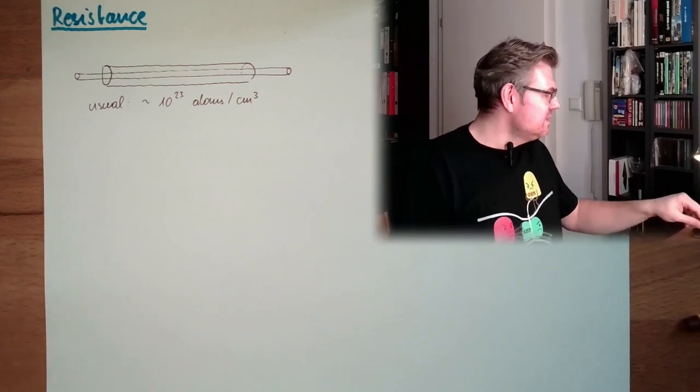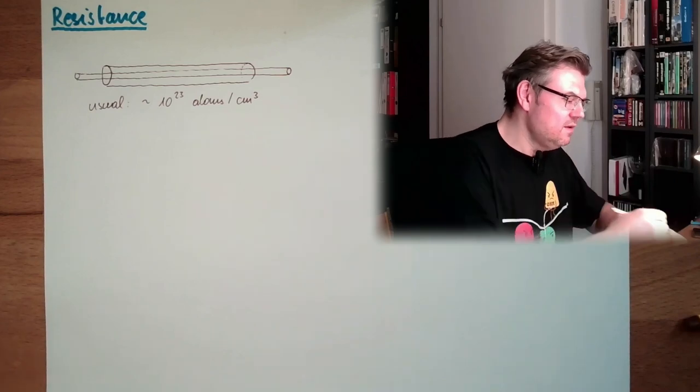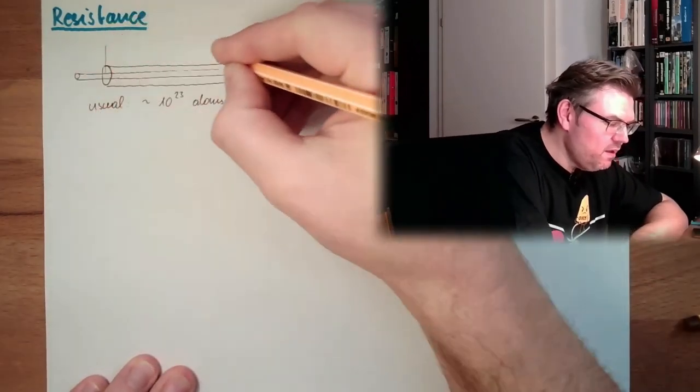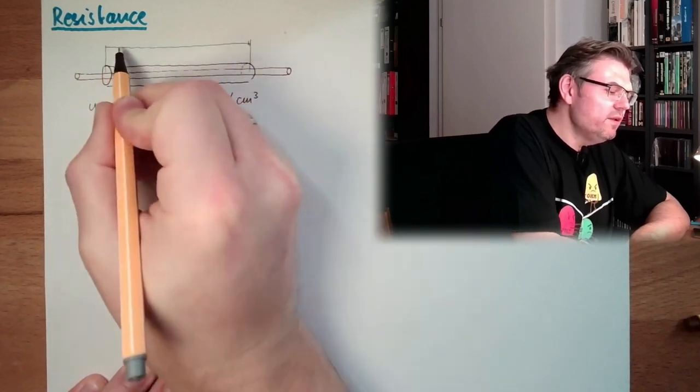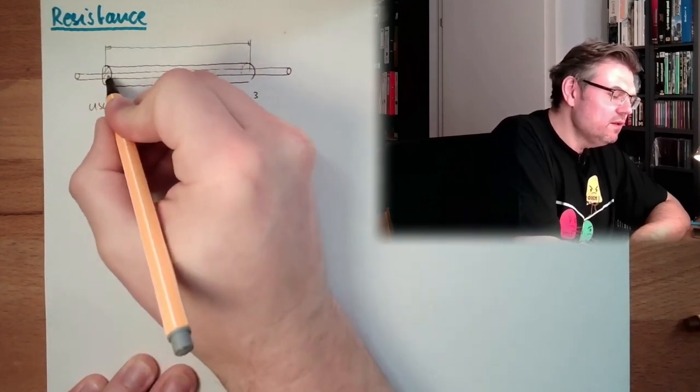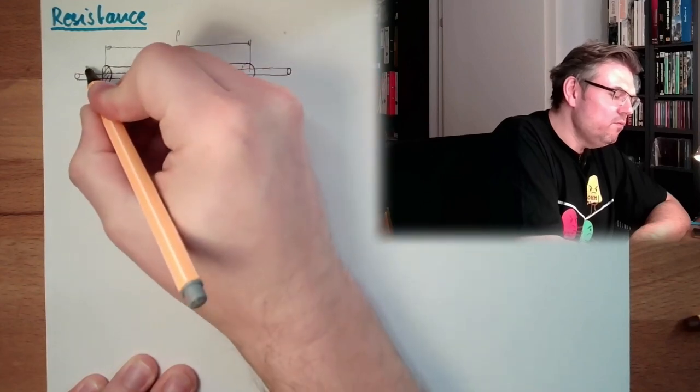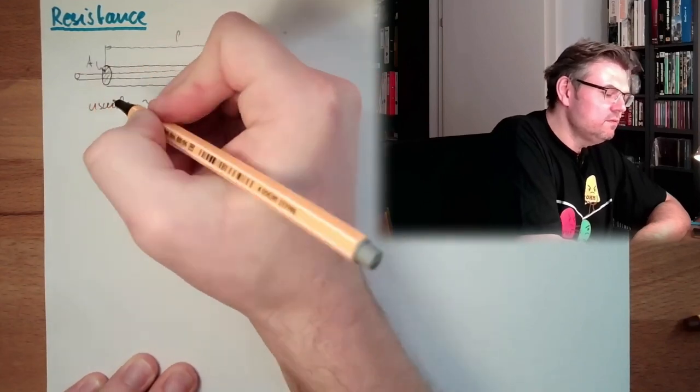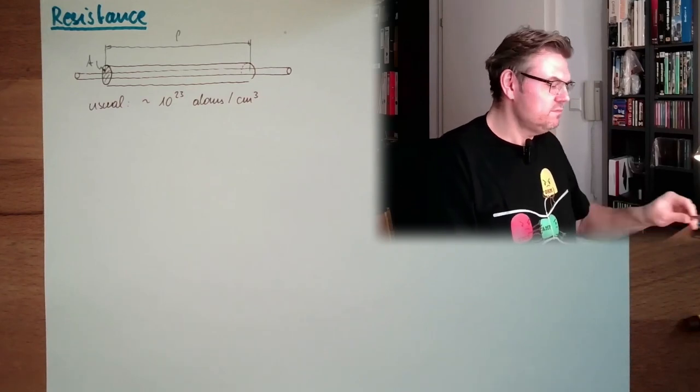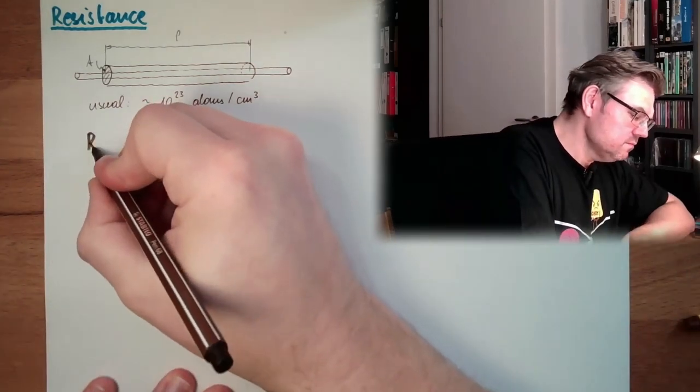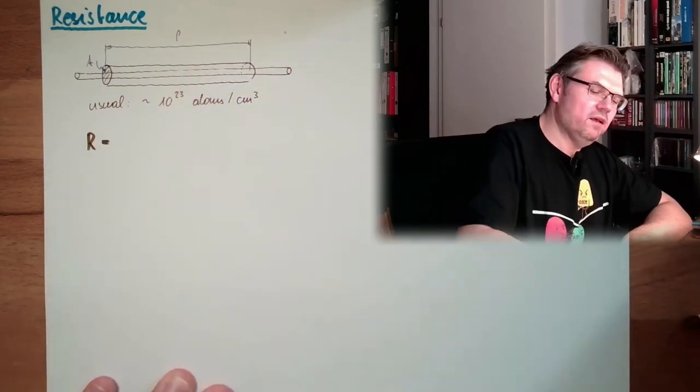So how is, we have here the length L. How is the resistance calculated of a certain material? Have a look at that. Here the length L. Here the length L. We have here the area A. And the resistance R is calculated.